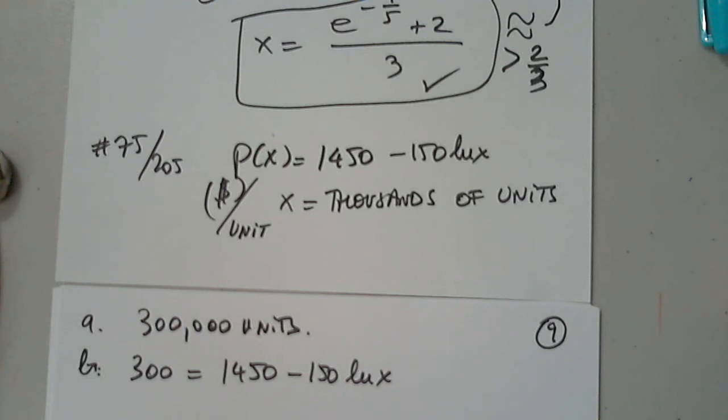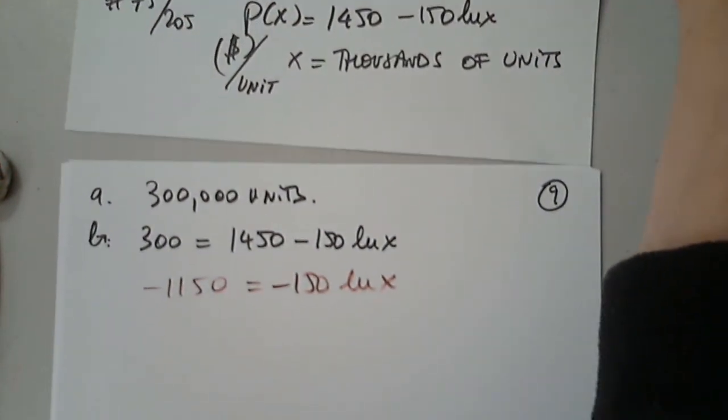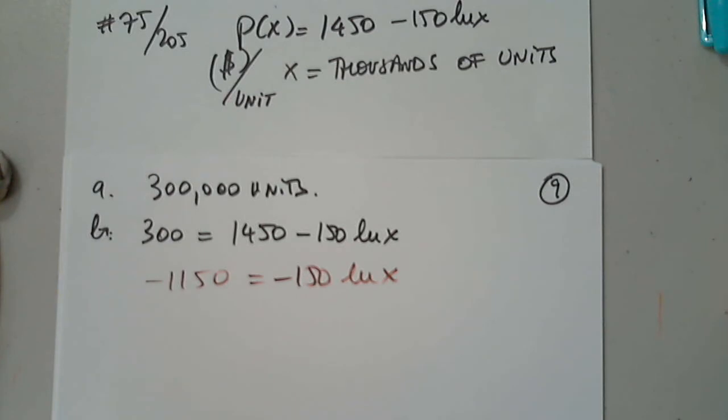Maybe get the log by itself? Exactly. So I have to clean it up. What would be the first step? Subtract 1450. Yes. So 450 minus 300, I think is 1150. Negative 1150 equals. Good. It's still not cleaned up. What do I need to do next? What do I need to do next? Divide both sides. Very good.